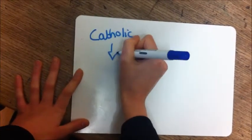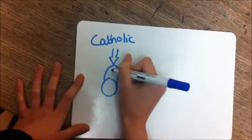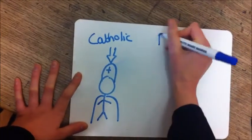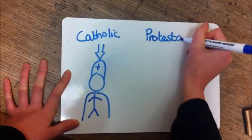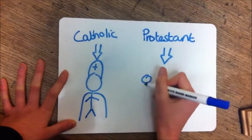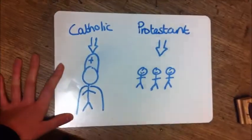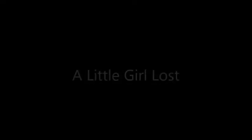Catholics believe more in authority of the priesthood, whereas in the Protestant branch of Christianity, they believe in the immediate contract of the individual with God, irrespective of priestly intercession. So each individual is more important, rather than having one central authority figure.